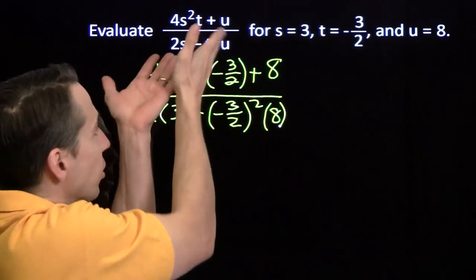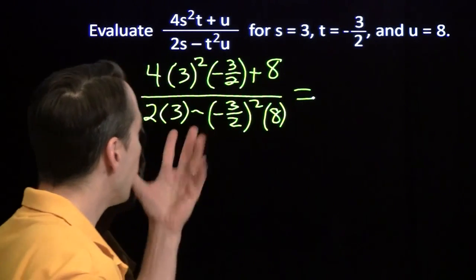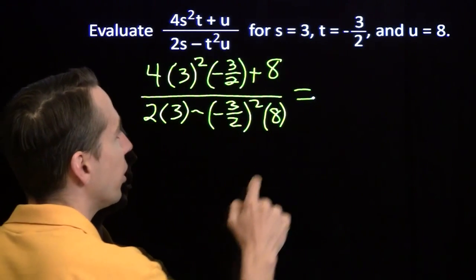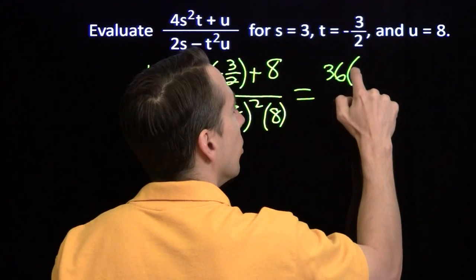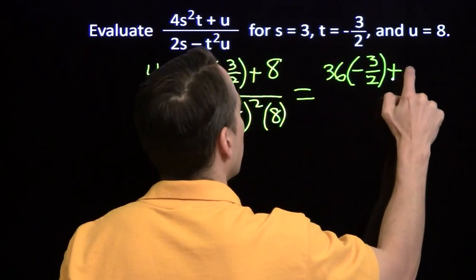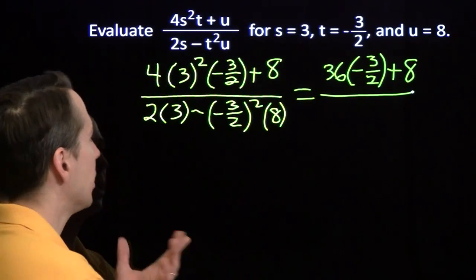So now I've turned this algebra problem into an arithmetic problem. We have to be careful with this arithmetic, but 3 squared is 9. 9 times 4 is 36. I'm going to go ahead and write that down before I hit it with the fraction. So I like to break down my arithmetic into steps. That helps keep me from making mistakes.